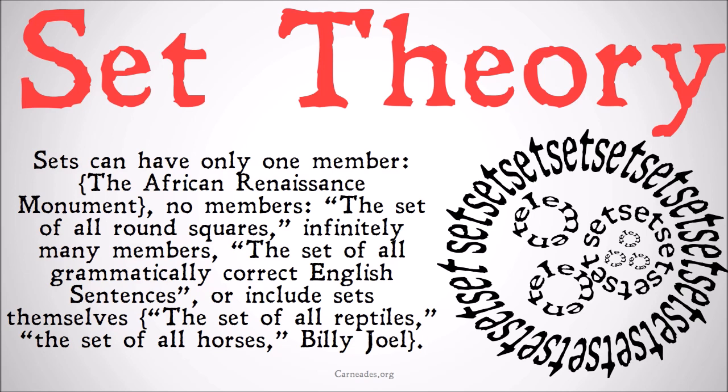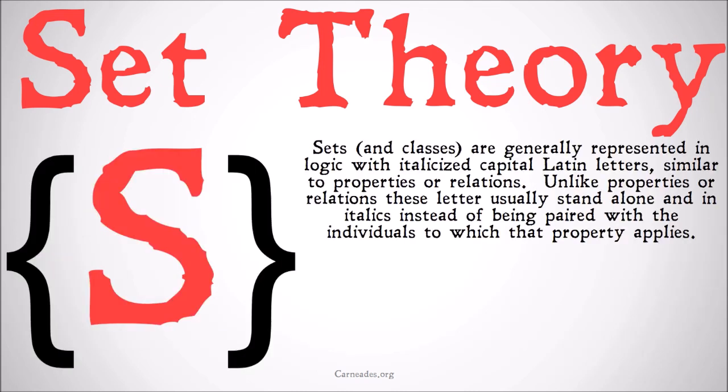For example, you could have the set of all reptiles, the set of all horses, and Billy Joel. Your set is then the set containing: the set of all reptiles, the set of all horses, and Billy Joel. We'll look at the distinction between having a set of a set and just having a set in a future video — it may sound complicated, but it's not.